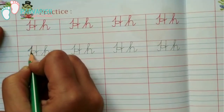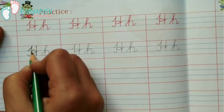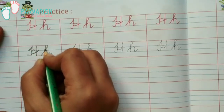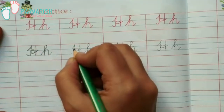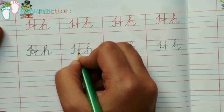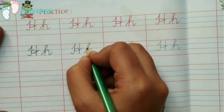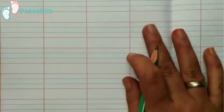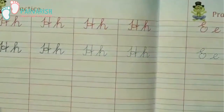Capital cursive H, small cursive H. First, let me see this trace — capital cursive H, small cursive H. After then, we will fill the whole page.